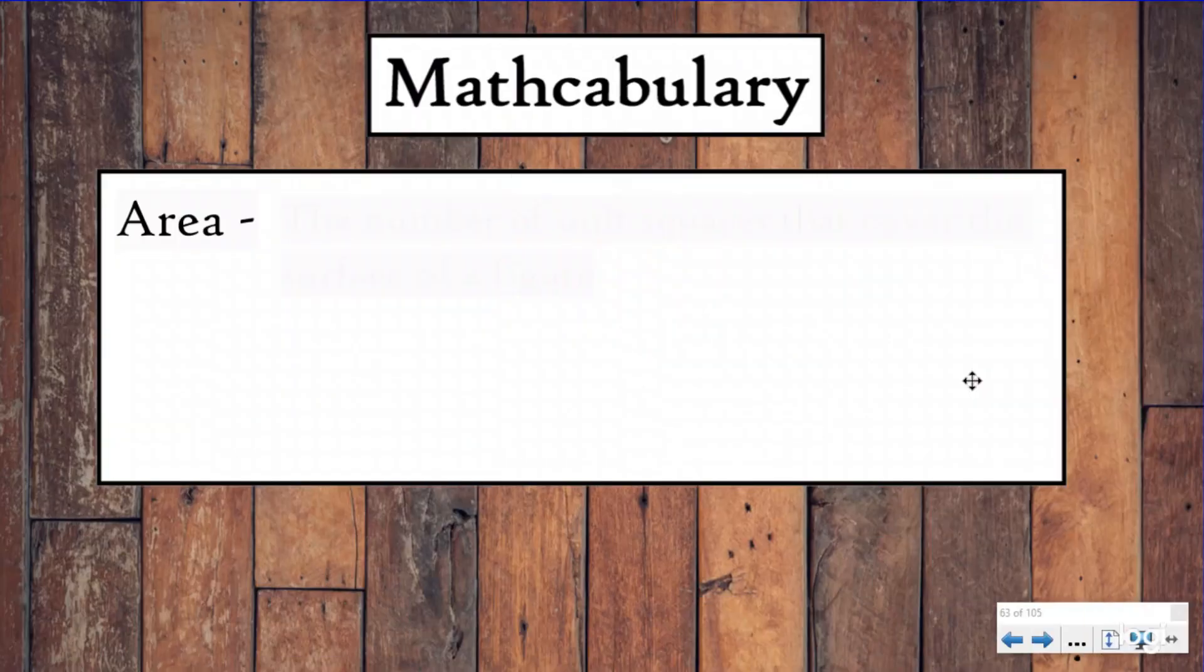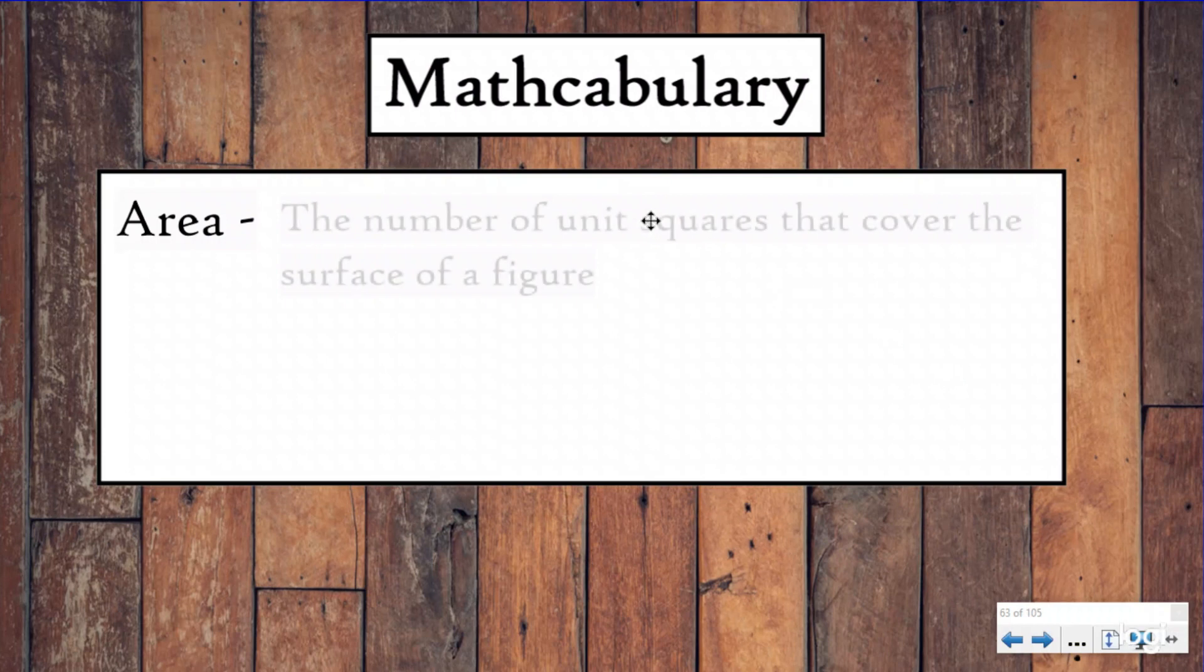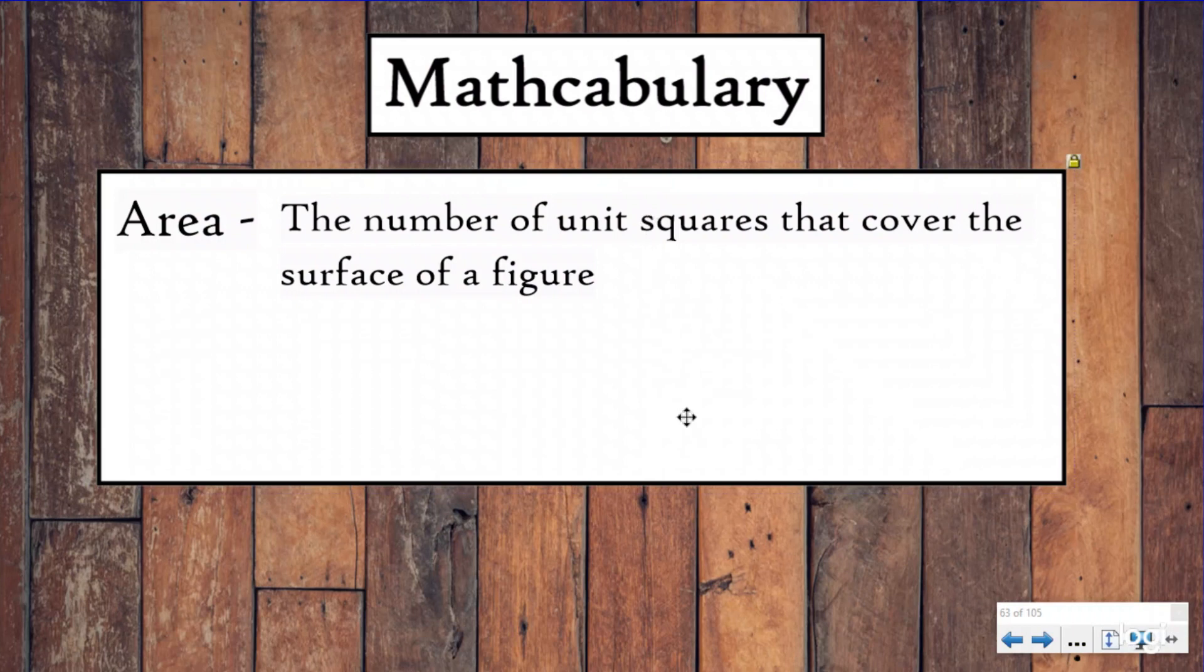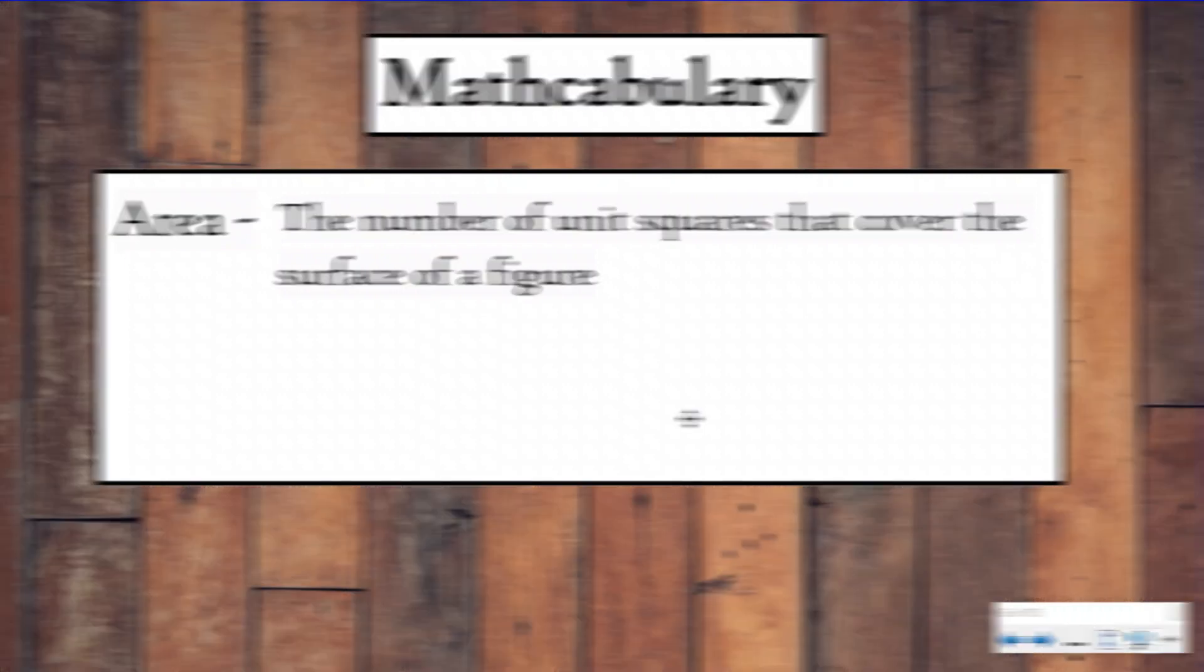Let's take a look at our area definition that we learned in our first area lesson. Our area definition says the number of unit squares that cover the surface of a figure. If you notice it didn't say the number of unit squares that cover the surface of a rectangle or a square. Those are the shapes we've been talking about in our area unit, but you can find the area of any surface of any figure. Today we're going to be taking the knowledge of finding areas of rectangles and applying them to irregular figures.